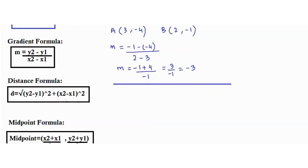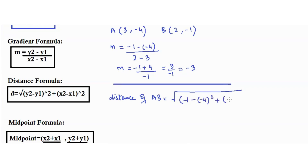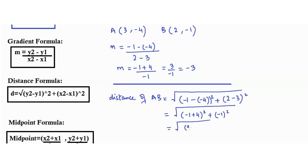Moving on to the distance formula, let's find the distance of AB using the same coordinates. We compute the square root of (negative 1 minus negative 4) squared plus (2 minus 3) squared. Negative 1 plus 4 is 3, so we have 3 squared plus 1, which is 9 plus 1.